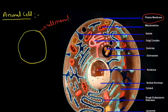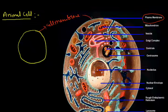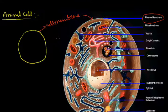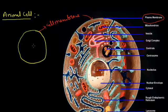In the case of the animal cell, the cell membrane is the outermost layer. There is no cell wall, because the cell wall is the outermost layer in the case of the plant cell. The second point: in the animal cell, the nucleus is present in the center of the cell.